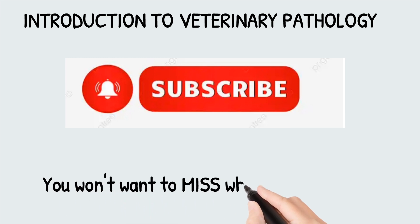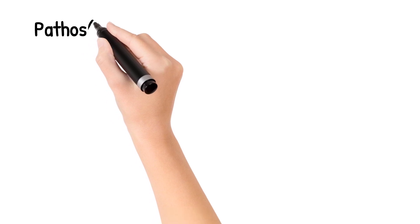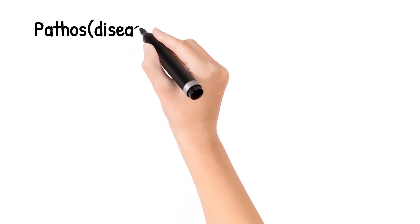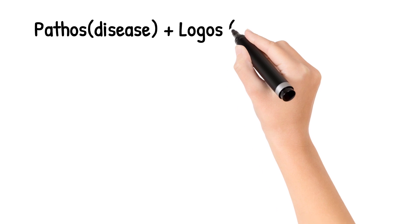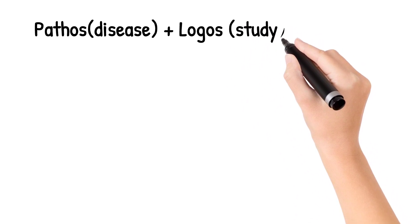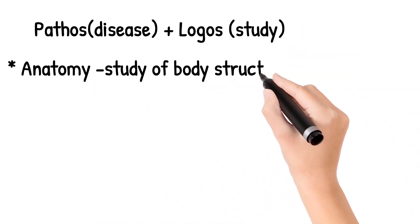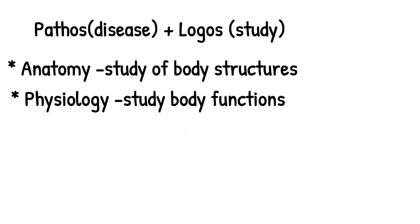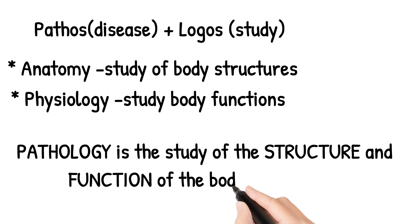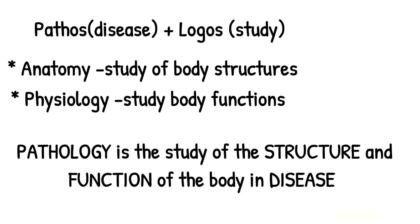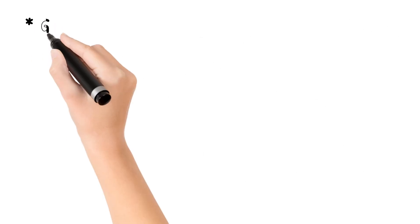Let's start by defining the word pathology. Pathology is derived from two words: pathos, meaning disease, and logos, meaning study. Just as anatomy is the study of body structures and physiology is the study of body functions, pathology is the study of the structure and function of the body in disease.